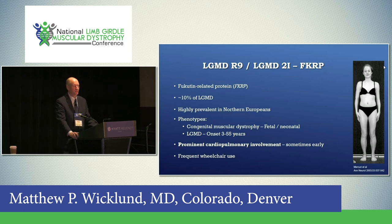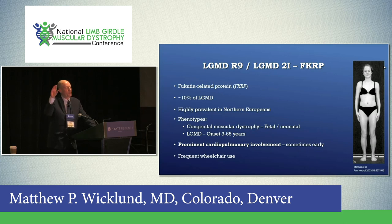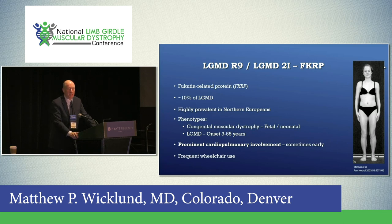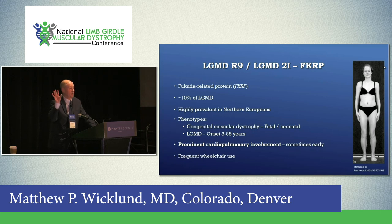FKRP — Fukutin-related protein — is one of the more common muscular dystrophies. LGMD2I, now LGMD-R9. It's very prevalent in Northern Europeans, with a founder mutation occurring in literally two-thirds of the alleles when tested. The phenotype can be congenital, but most commonly onset is in single digits or a little older. There can be prominent cardiopulmonary involvement — which can occur early before much skeletal muscle involvement — and wheelchairs are frequently needed.